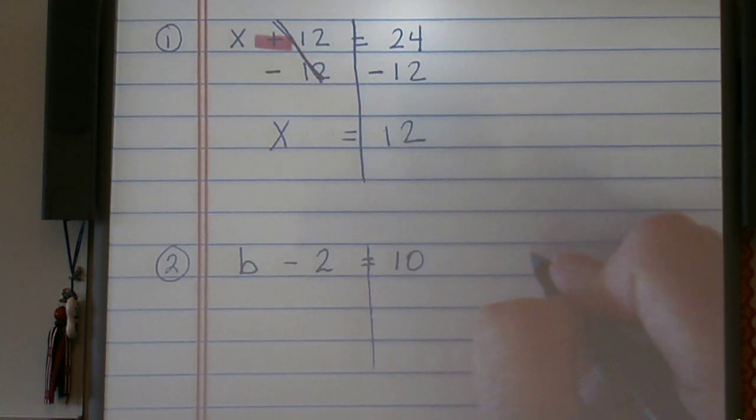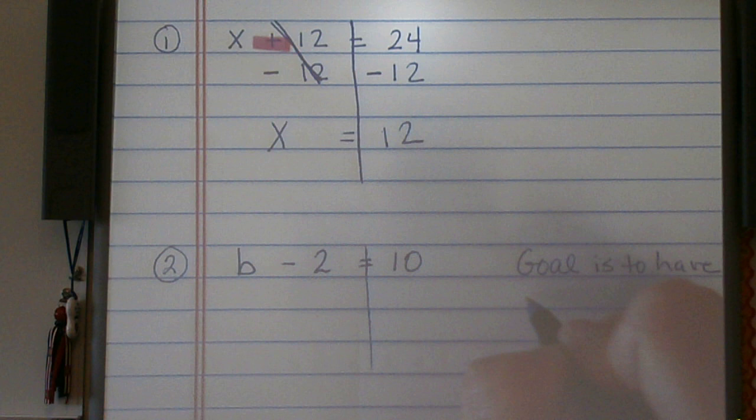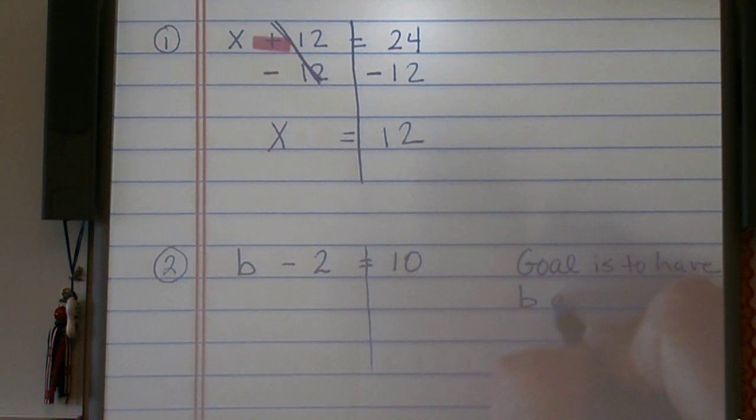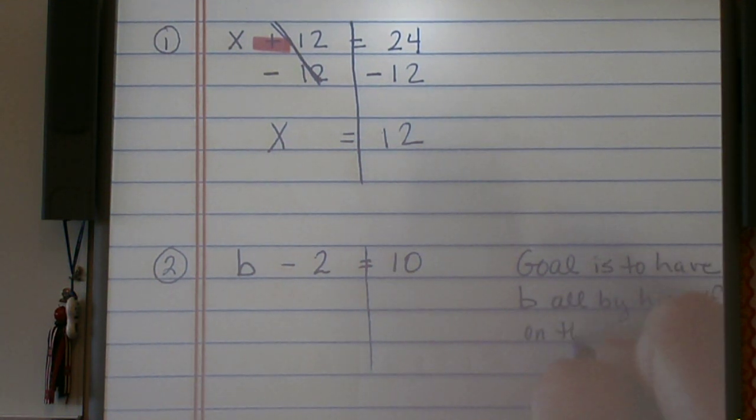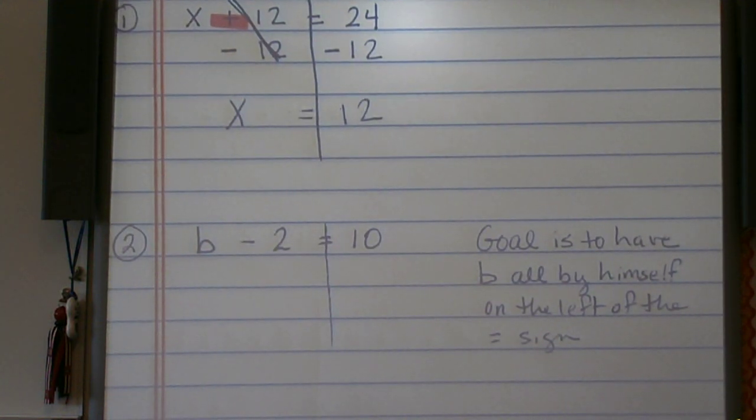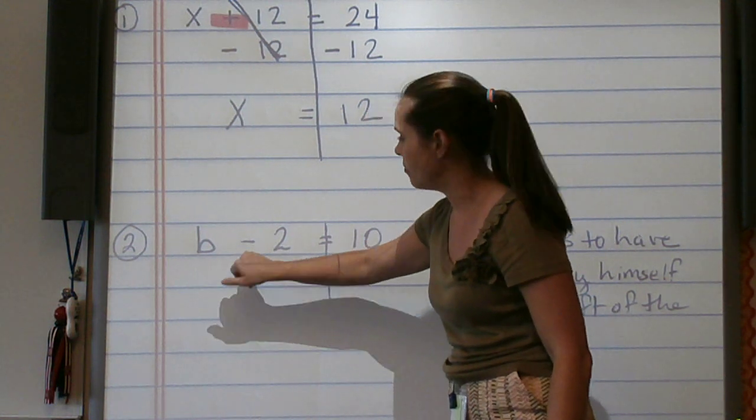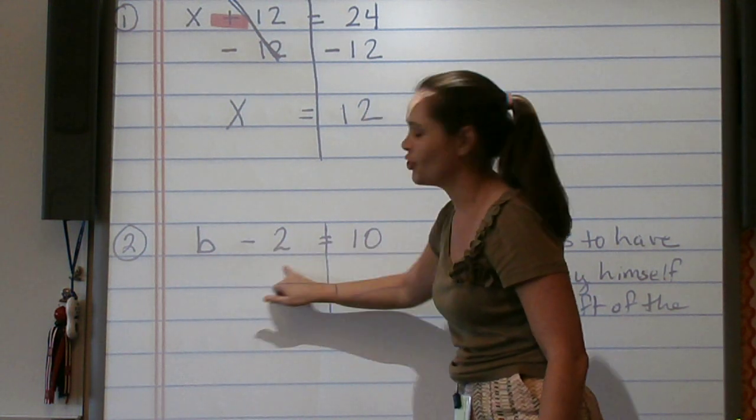Now, again, my goal is to have B all by himself on the left of the equal sign. But right now, B is not all by himself. B has a minus 2. So again, we want to use our inverse operations to get rid of this 2 so that we're only looking at B on the left-hand side of the equal sign.